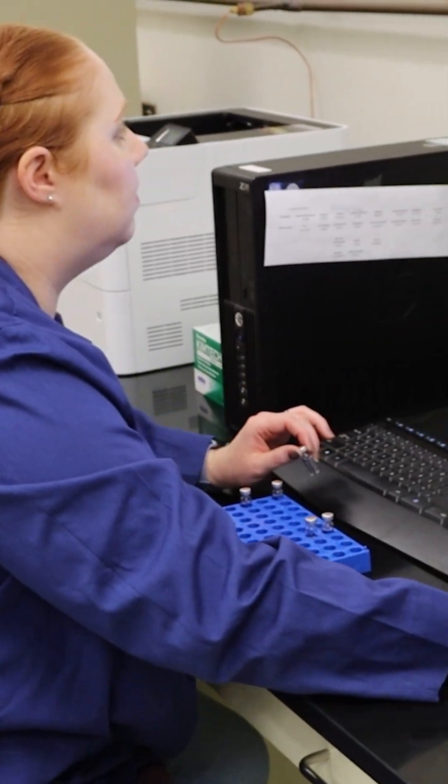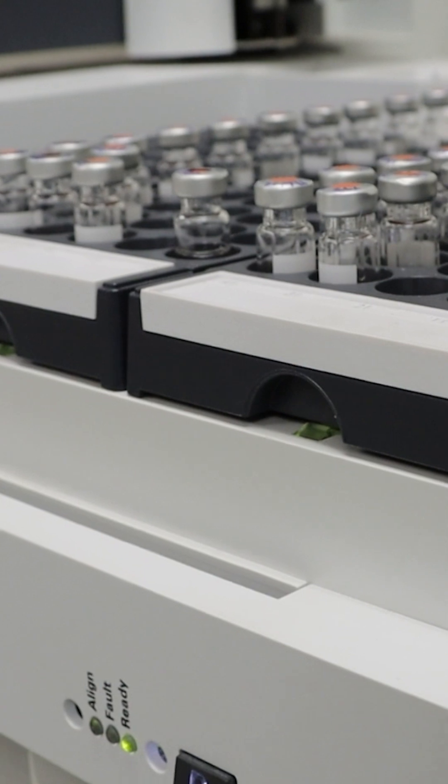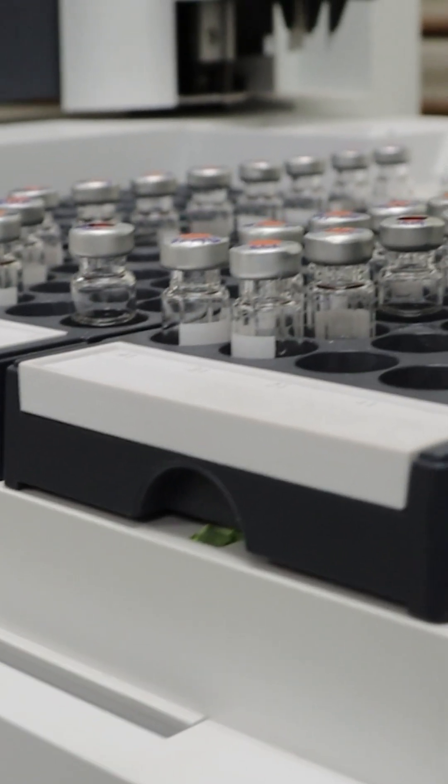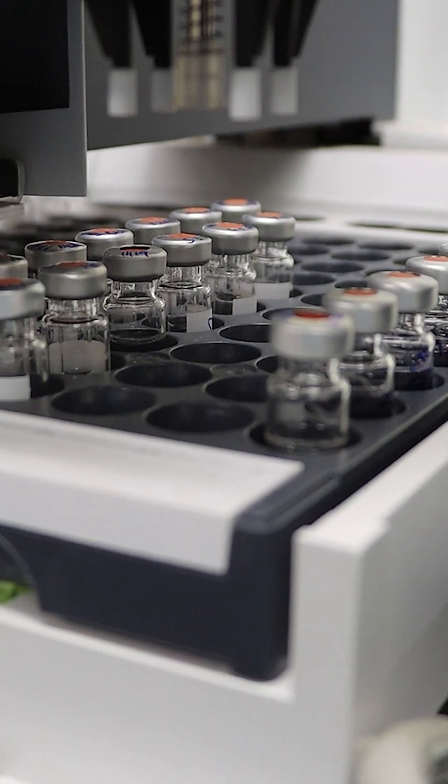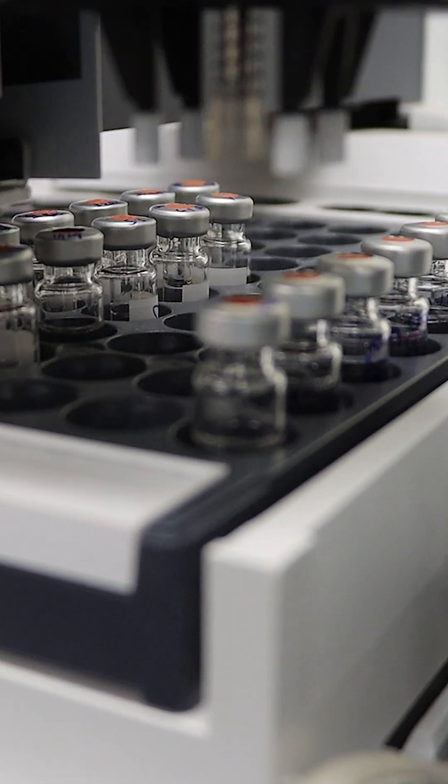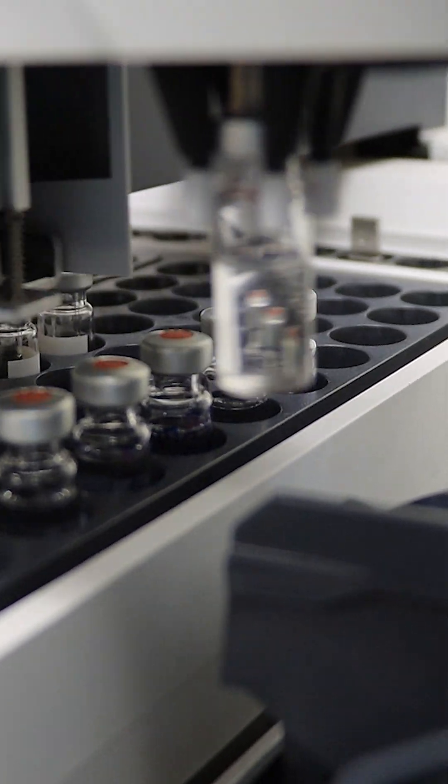We use a gas chromatograph mass spectrometer for our analysis, abbreviated to GC-MS. It's a two-part instrument with the GC portion, the gas chromatograph portion, separating compounds based on their polarity and their interaction with the column as it pushes them through.